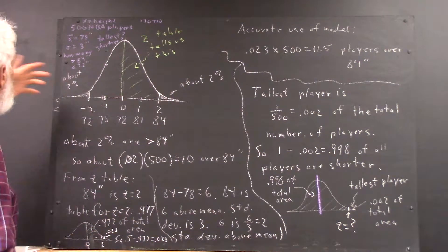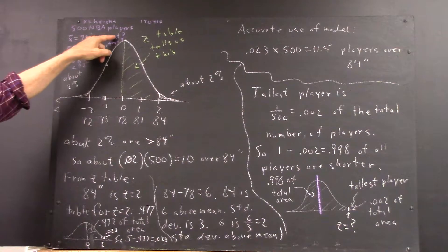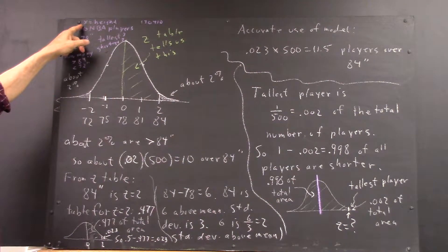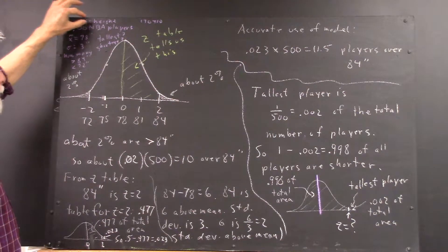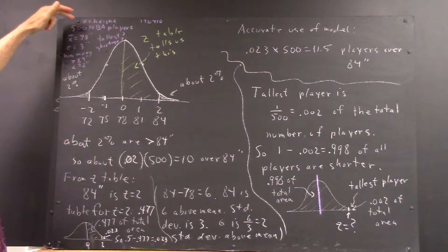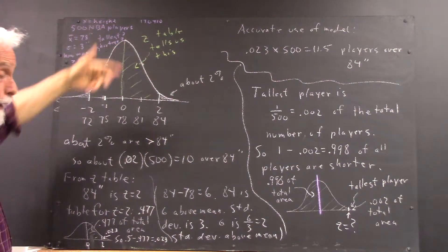We're given a problem where we hypothetically have 500 NBA players and x is the height. We're looking at the distribution of the variable x, the random variable x, which represents the height of basketball players.